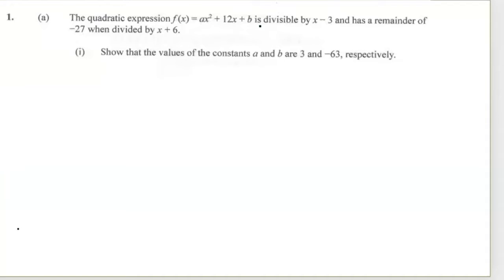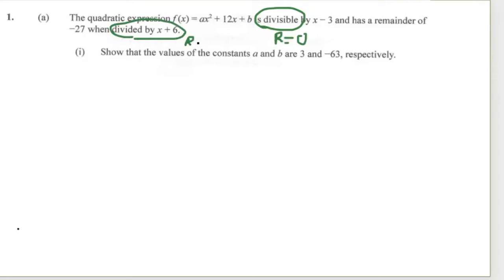The word 'divisible' means that when I divide I will get a remainder of zero, or when I substitute I will get zero. Also, when I divide by x + 6 I will get a remainder of negative 27, or if I substitute negative 6 I will get negative 27.